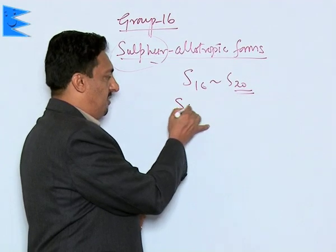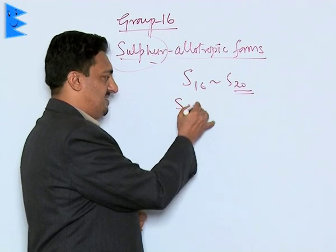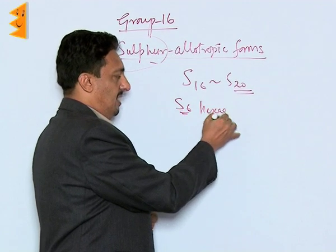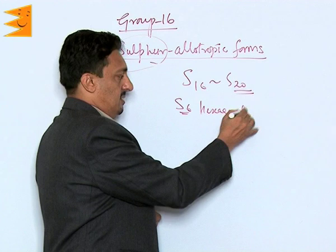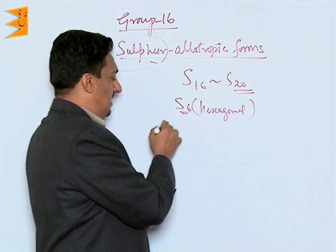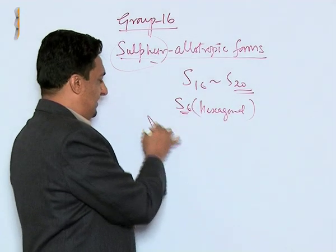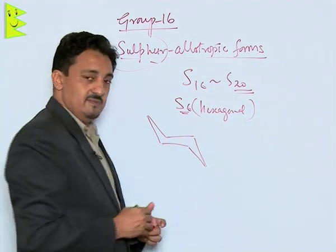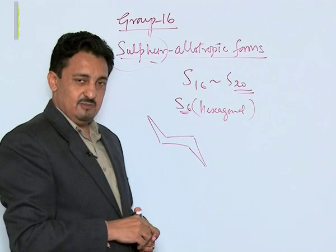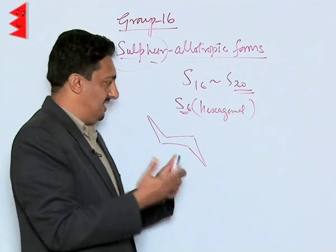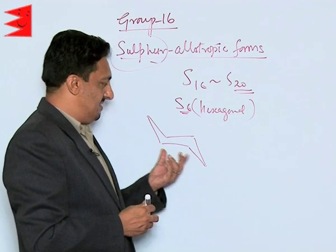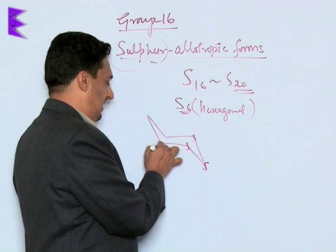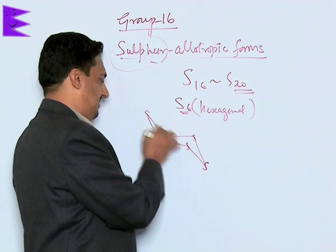Sulphur also exists in the form of S6 hexagonal rings, occurring in both boat and chair conformations. The chair form is given in the NCERT textbook and is the most stable form of Sulphur in S6 rings.